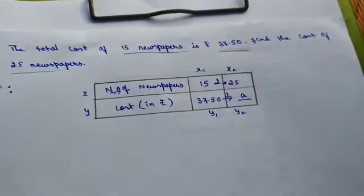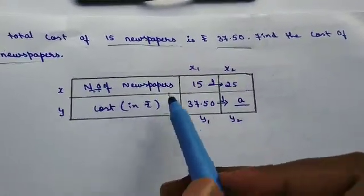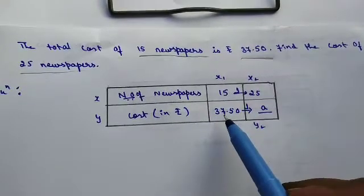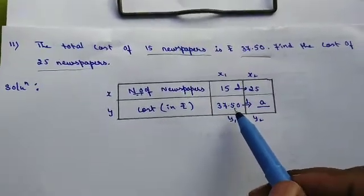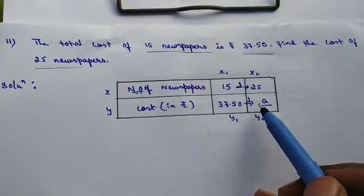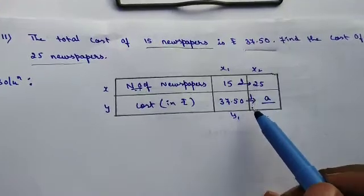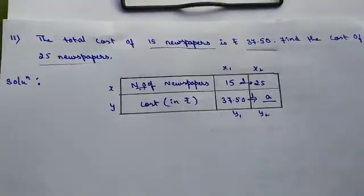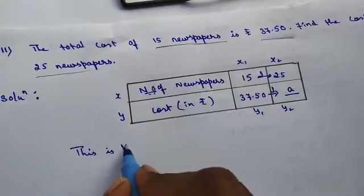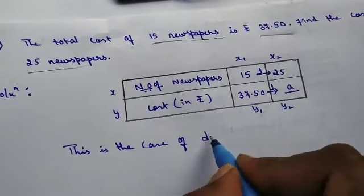The table is ready children here. Number of newspapers and cost in Rs. So 15 newspapers cost is Rs. 37.50. And 25 newspapers, it will be greater than Rs. 37.50. So both are in increasing order. So this is in direct variation. So this is the case of direct variation.